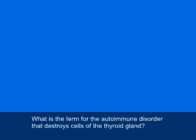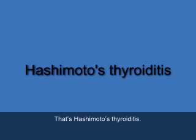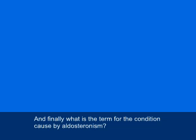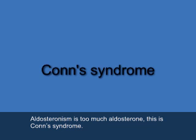What is the term for the autoimmune disorder that destroys cells of the thyroid gland? That's Hashimoto's Thyroiditis — capital H-A-S-H-I-M-O-T-O, apostrophe S, thyroiditis. And finally, what is the term for the condition caused by aldosteronism? Well, aldosteronism is too much aldosterone. This is Conn's Syndrome, capital C, O-N-N, apostrophe S, syndrome.